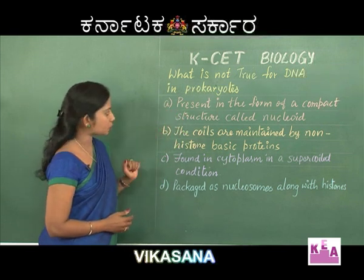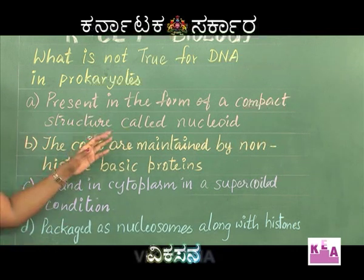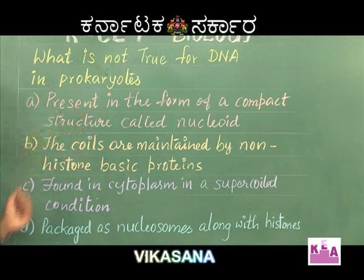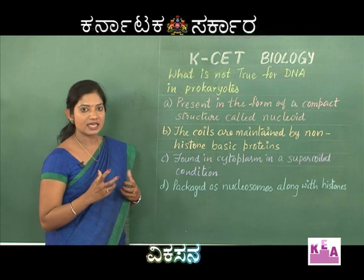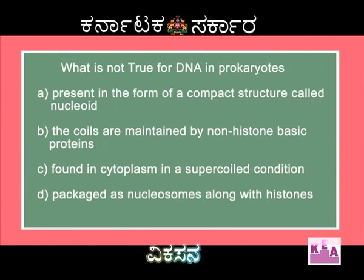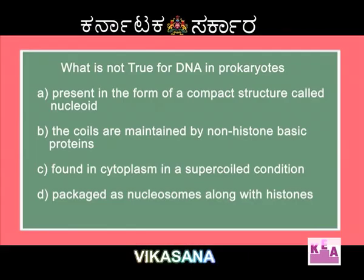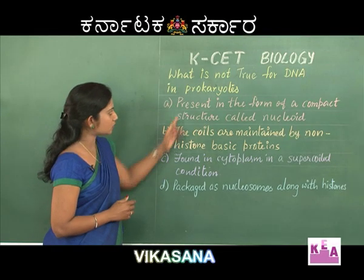Let us start from the first option: present in the form of a compact structure called nucleoid. In prokaryotes, you will not find a true nucleus; the genetic material is found in a coiled form called a nucleoid, so this option is right. The next one — the coils are maintained by non-histone basic proteins — is also right for prokaryotes, because the coiling is due to non-histone basic proteins. The third option, found in cytoplasm in a supercoiled condition, is also right with respect to prokaryotes.